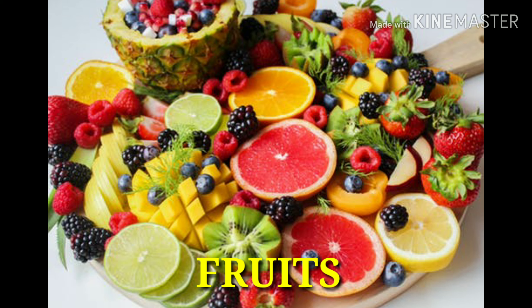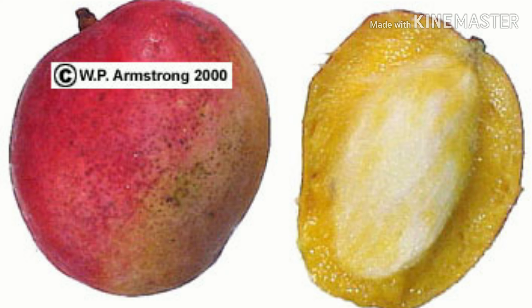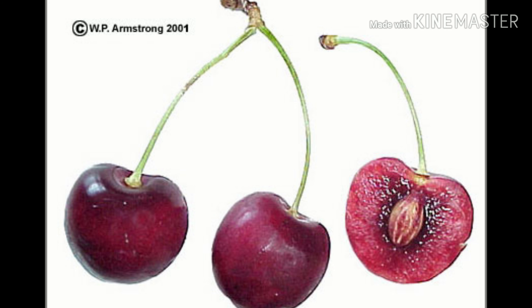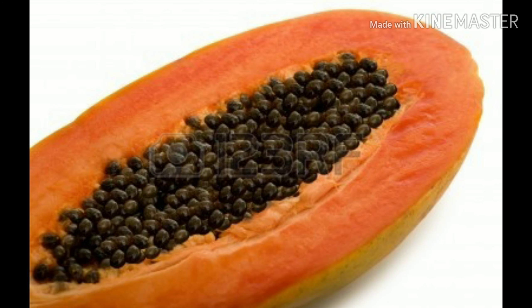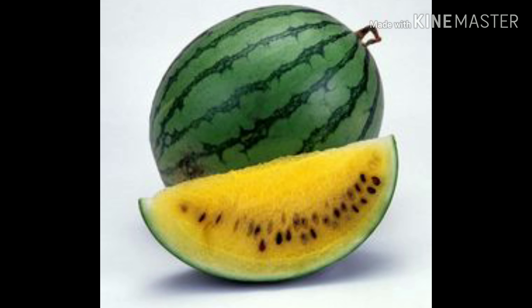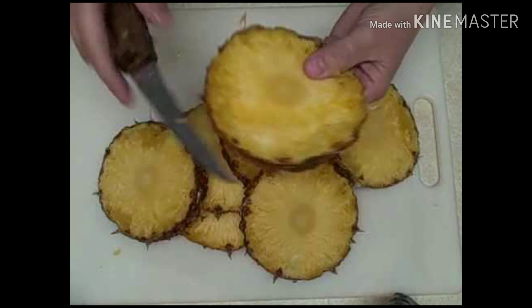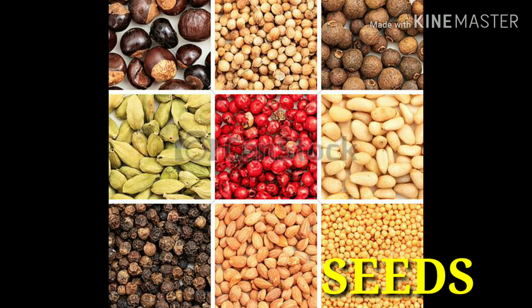The teacher should explain that a flower changes into a fruit. Fruits come in different colors, sizes, tastes, and flavors. Most fruits have seeds inside them and protect those seeds. Some fruits have only one seed — for example, mango, cherry, jamun, and plum — while some fruits have more than one seed, for example, papaya, watermelon, and apple. Pineapple is a fruit with no seeds.